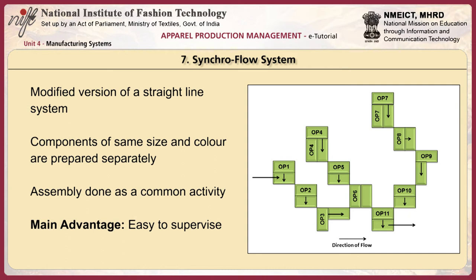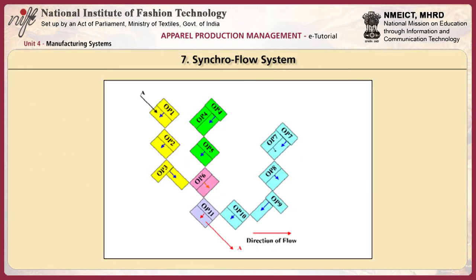Let us look at the synchro flow system. It is the modified version of a straight line system. As you can see in the picture, components of the same size and color are prepared separately — sub-assembly activities are done separately — and the main assembly is a common activity, wherein all sub-assemblies come to one place and are sorted to feed the main assembly. The main advantage here is that it is easier to supervise.